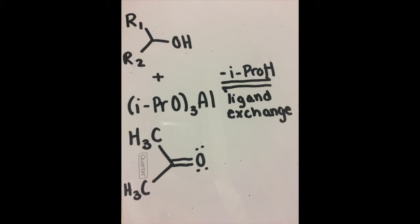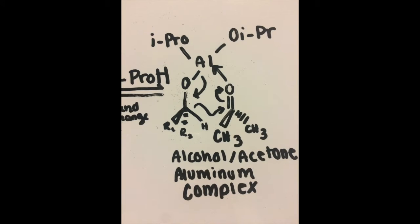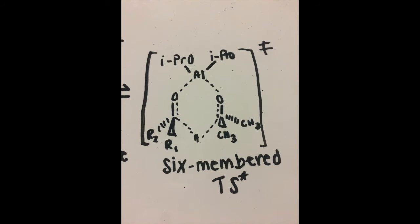In this starting material, the acetone and substrate alcohol bind to the metal ion. The starting material then undergoes a ligand exchange, resulting in an alcohol-acetone-aluminum complex, which activates a hydride transfer from the alkoxide. The hydride transfer occurs in this transition state.